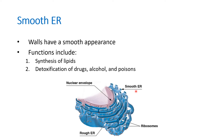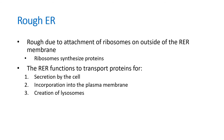The smooth endoplasmic reticulum helps in making lipids and also helps with detoxification of drugs and alcohol. If you think about which cells have more smooth ER, an example would be liver cells, since the liver helps detoxify things like alcohol. So liver cells will have more smooth ER compared to muscle cells.